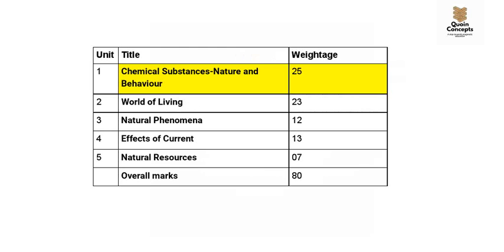The very first unit is Chemical Substances: Nature and Behavior, with a weightage of 25 marks. The second unit is World of Living, with 23 marks. The third unit is Natural Phenomena, with 12 marks. The fourth unit is Effects of Current, with 13 marks. The fifth unit is Natural Resources, with 7 marks. Overall weightage is 80 marks.